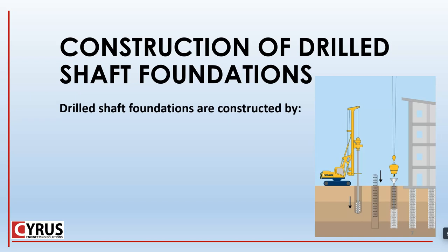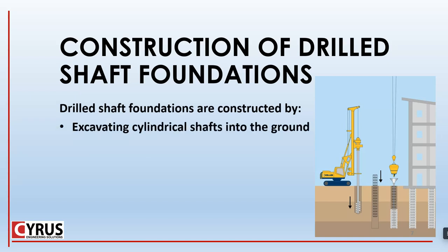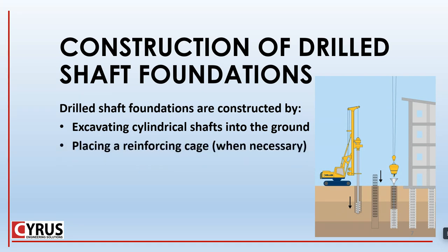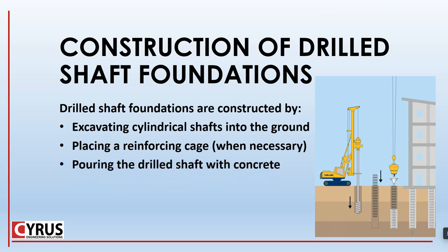Construction of drilled shaft foundations is rather easy. It starts with excavating a cylindrical shaft into the ground, placing a reinforced cage — which is necessary in most cases — and pouring the drilled shaft with concrete. Then you will have your foundation.